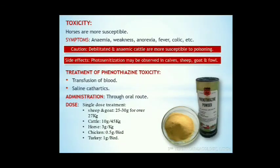Toxicity. Horses are more susceptible to toxic symptoms of phenothiazines. The symptoms are anemia, weakness, anorexia, fever, colic, etc. Debilitated and anemic cattle are more susceptible to poisoning. Side effects include photosensitization in calves, sheep, goat, and fowl. Toxicity can be treated by transfusion of blood and saline cathartics. Administration is by oral route. In single dose treatment, sheep and goat are given 25-30 grams for animals over 27 kg; cattle are given 10 grams per 45 kg body weight; horses are given 3 grams per kg; chickens are given 0.5 grams per bird and turkeys 1 gram per bird.